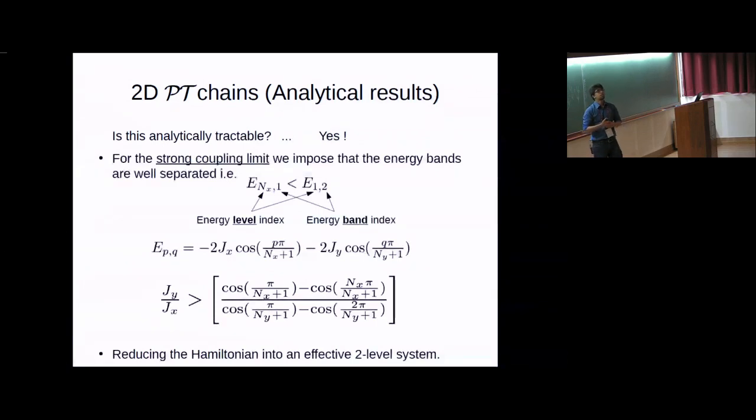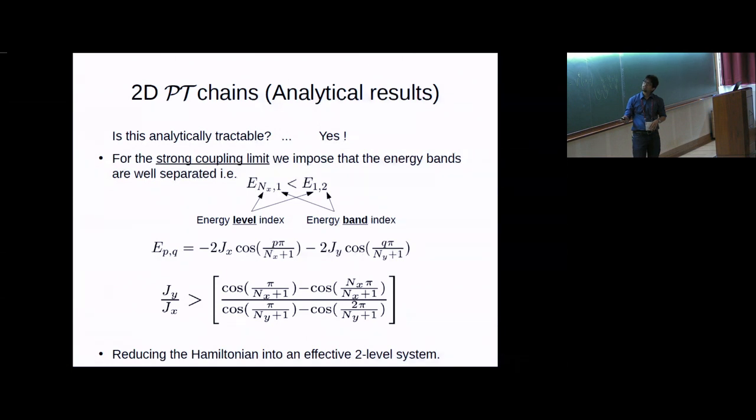This is how we do it. But first we want to assume the strong coupling limit. We want to emphasize what is a strong coupling. We say that if you see the band structure of this two-dimensional system, in the Hermitian case, you see that under stronger J-Y coupling, all the bands are separated out. Each level in the band is given by this. I denote the first index as the energy level index in a particular band, and the next after the comma is the band index. So you have this expression where we can say that this is the strong coupling regime. We need our J-Y by J-X to be greater than this expression.